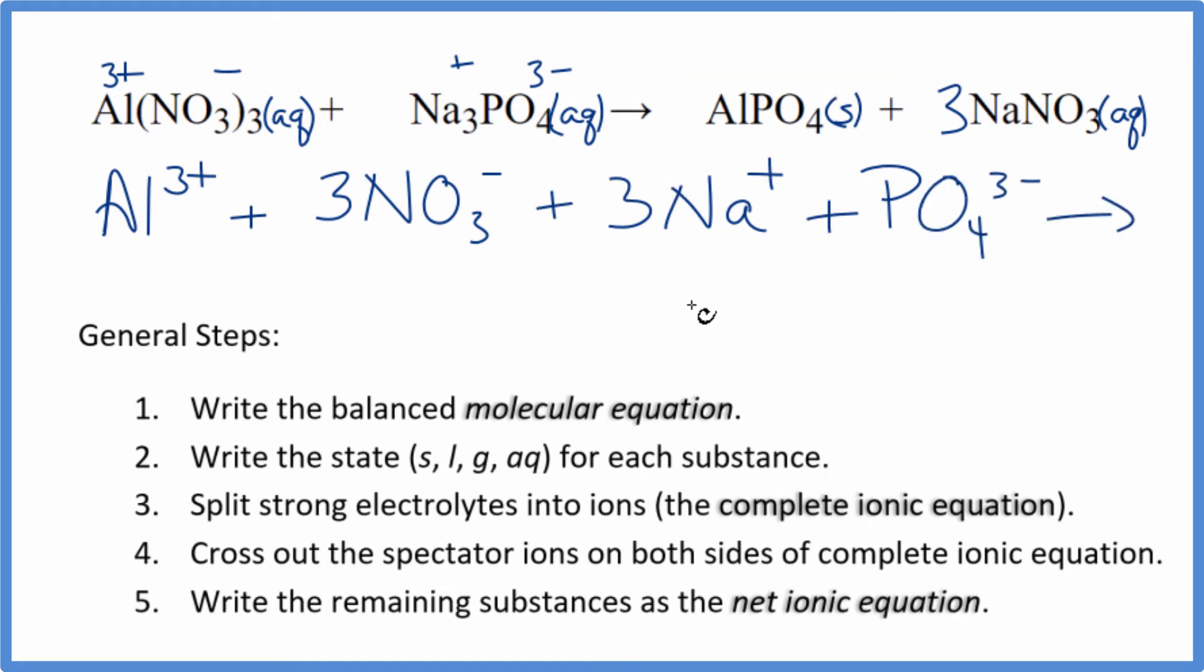So these are the reactants in our net ionic equation. For the products, we don't split solids apart in net ionic equations. So this is just going to be AlPO4, this aluminum phosphate. And then we said sodium is positive, the nitrate ion negative, three sodium ions. And then the three goes to everything here, we have three nitrate ions. So this is the complete ionic equation.